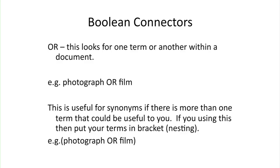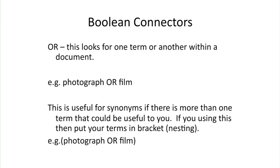Another Boolean connector that you might use is OR. This looks for one term or another within a document. It's useful for synonyms if there's more than one term that could be used for the thing you're looking for — for example, photograph OR film if you are looking for cases or articles relating to either of those terms. If you're going to use OR as a connector, then if you put your terms in brackets, the database will read that first. This is called nesting, and that can make your results more relevant.